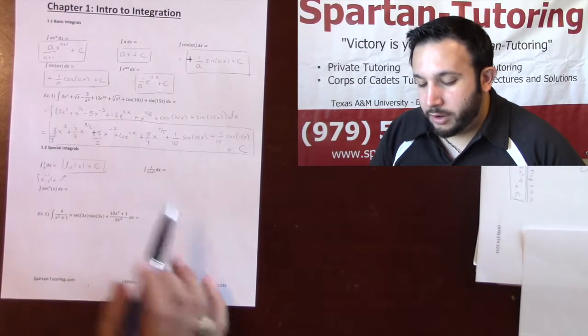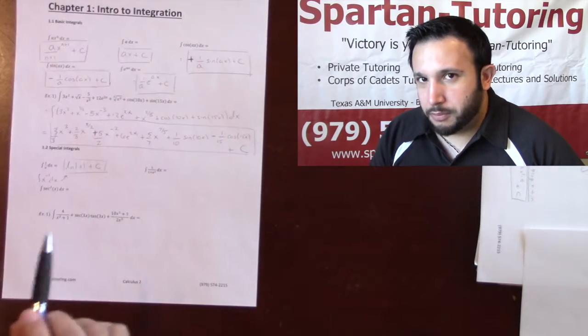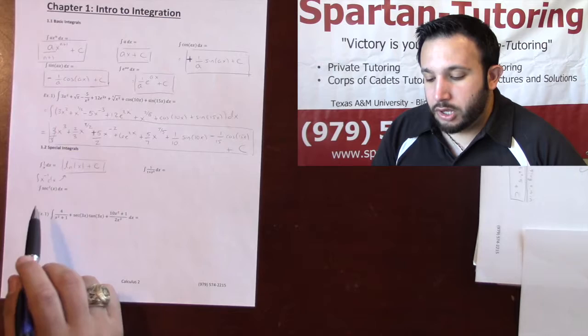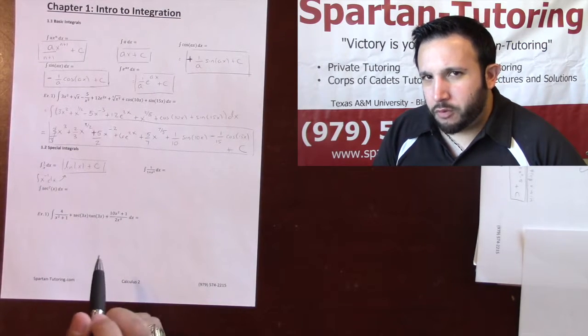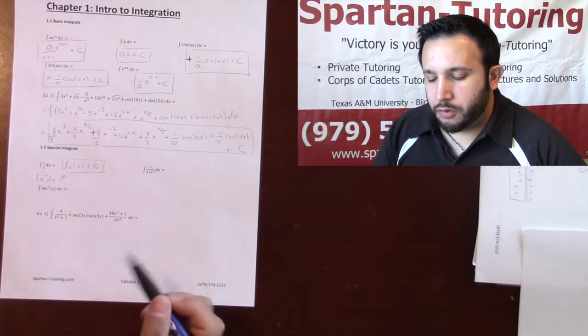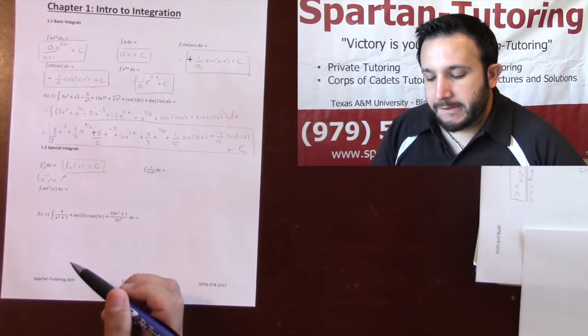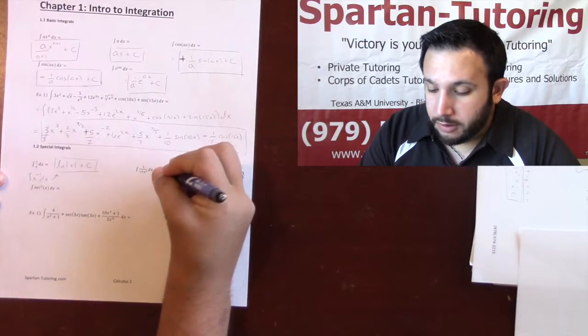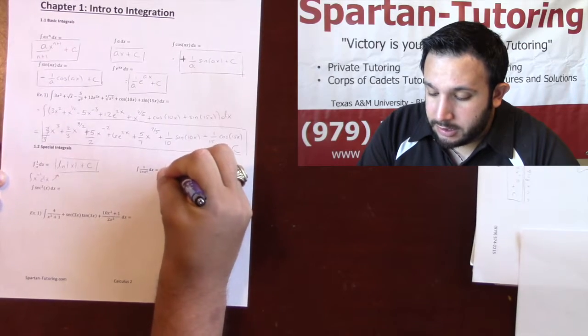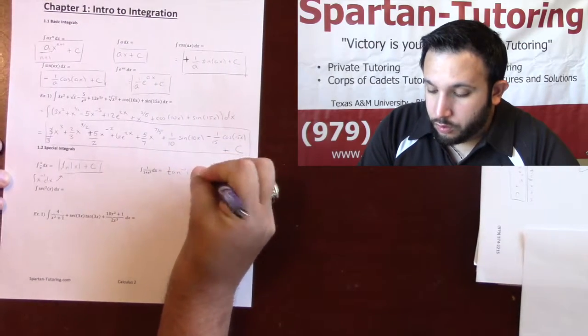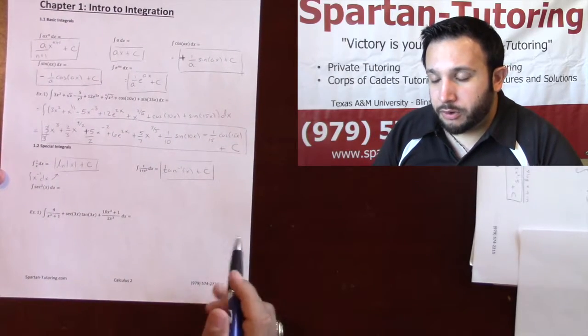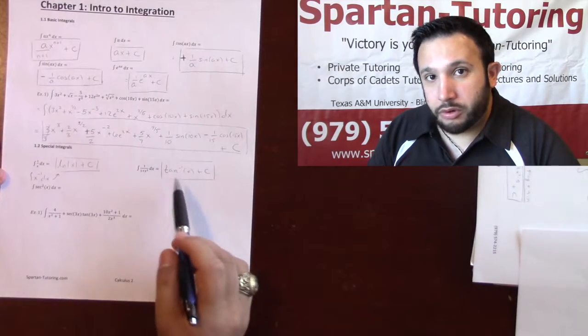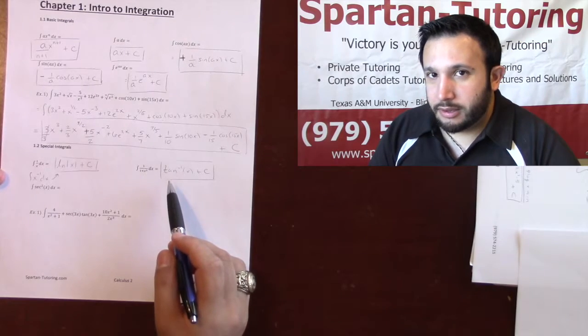Now let's take a look at the integral of 1 over x squared. This one isn't particularly special. What's special about this is we have to remember the derivative of what was 1 over 1 plus x squared. Well, the derivative of arc tangent was 1 over 1 plus x squared,